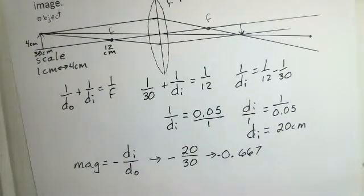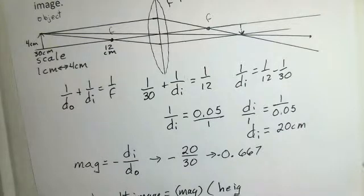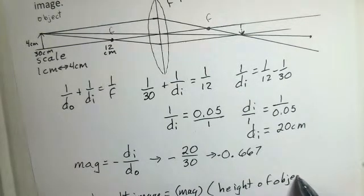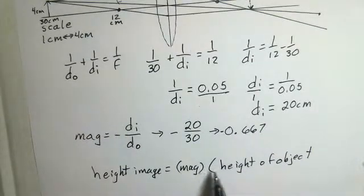The height of the image is equal to the magnification multiplied by the height of the object. Height of the image is magnification multiplied by the height of the object.